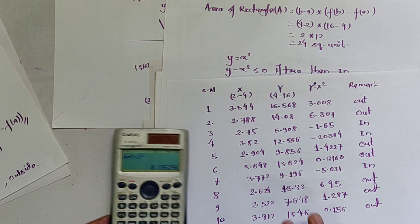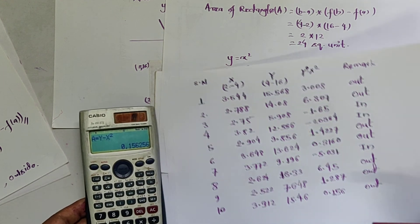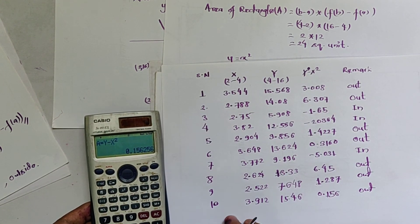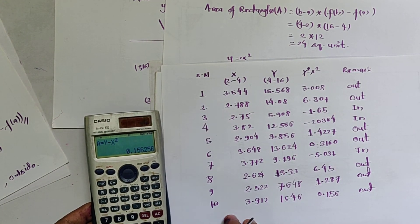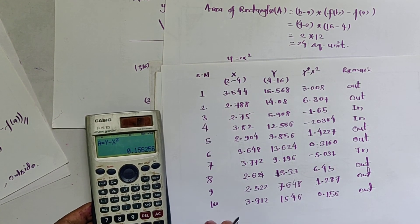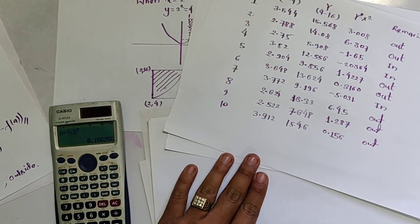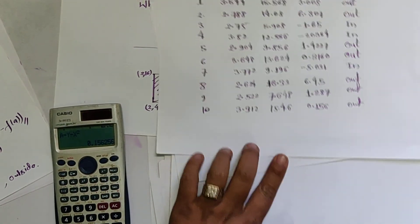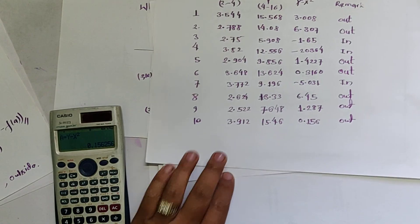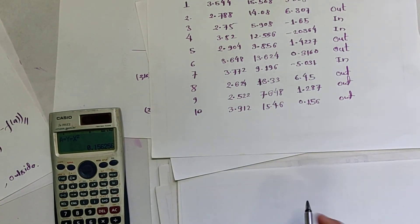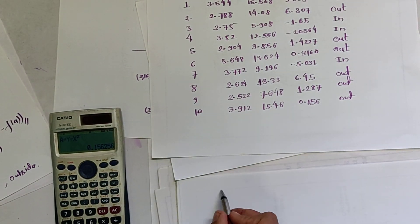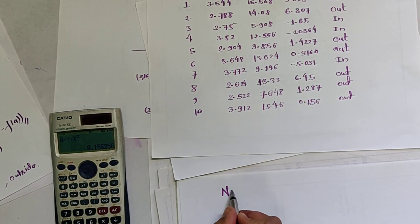I have taken up to only the 10th random number. It is better if we take up to 20 or 15 iterations, but for this video, we have taken only 10. So the total number of random numbers generated, n, equals 10.